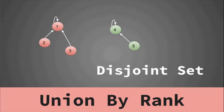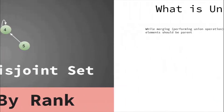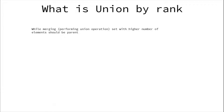Hello guys, this is Code and Code, and this is the eighth lecture of the DSU series. In this lecture, after a long time, we are going to continue this series and study about union by rank. This is an optimization technique like path compression. The difference is that path compression tries to optimize the running time using the find operation, while union by rank tries to optimize the running time in the merge function.